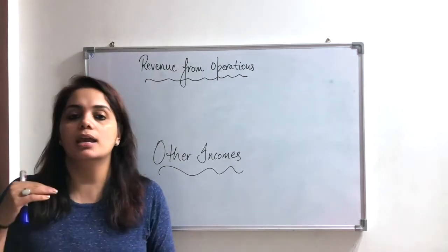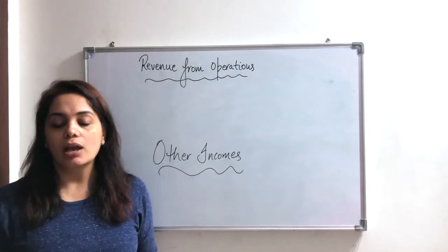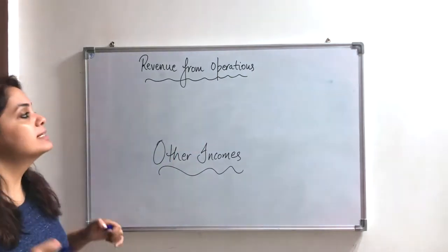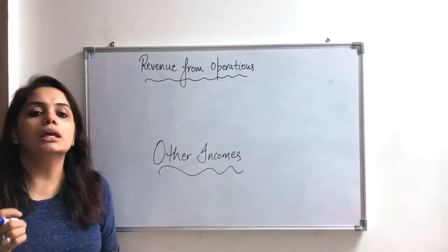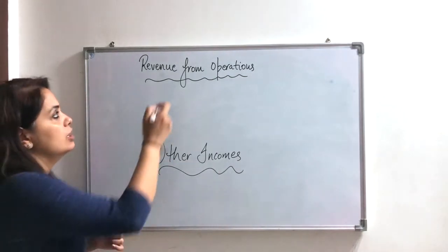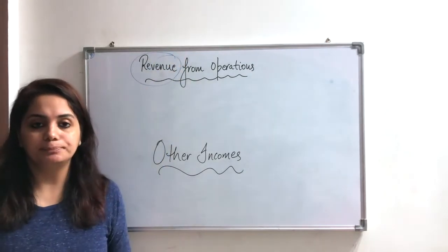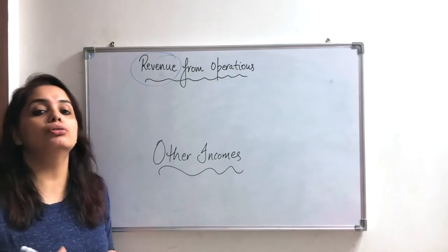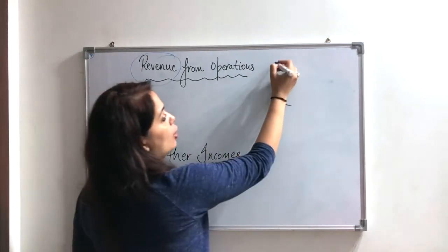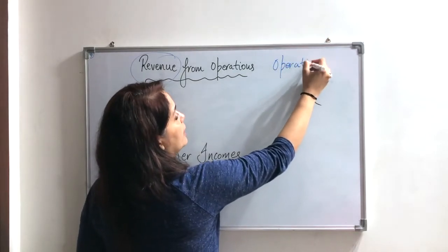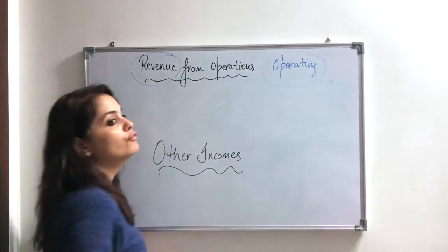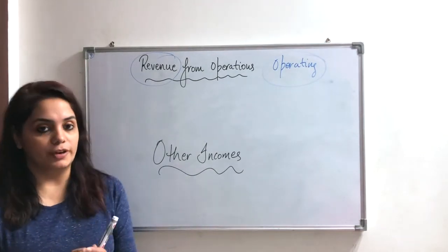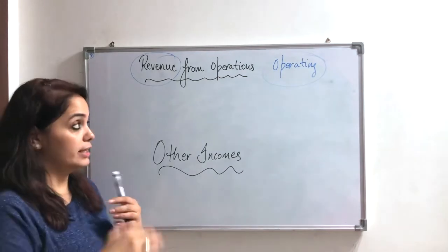Now in this video we will take the headings. First we have revenue from operations. What is revenue from operations? Revenue is income — whatever income you are getting through operating activities. And what are operating activities? Operating activities are the ones that the company carries out just to earn profit.